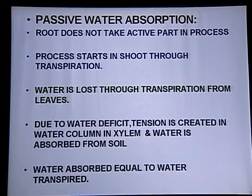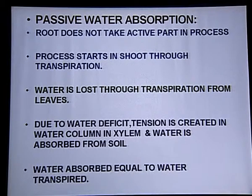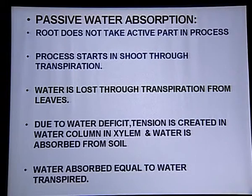Water from soil moves into the root hair cell and does not pass directly into its vacuole — instead it passes through apoplast, symplast, cortex, endodermis, and xylem. Because of very low water potential due to the tension under which water is present in xylem, caused by transpiration, water is absorbed from the soil. This method, in which the root plays no active part but the shoot processes like transpiration drive absorption, is called passive water absorption.